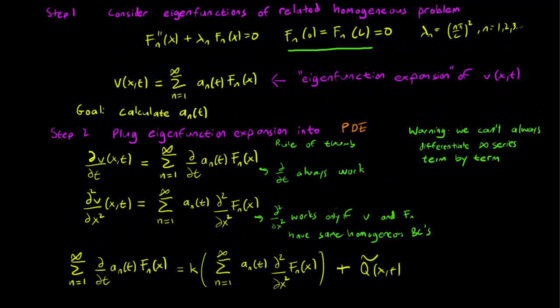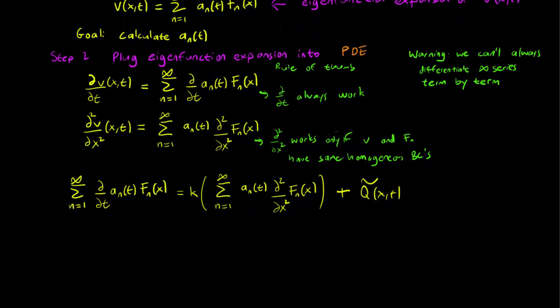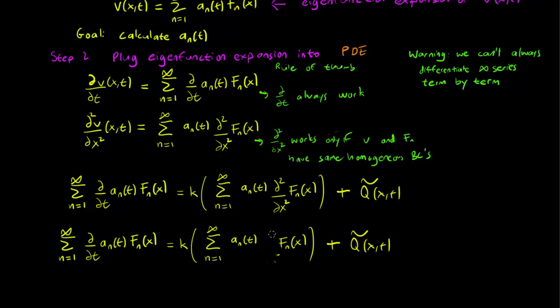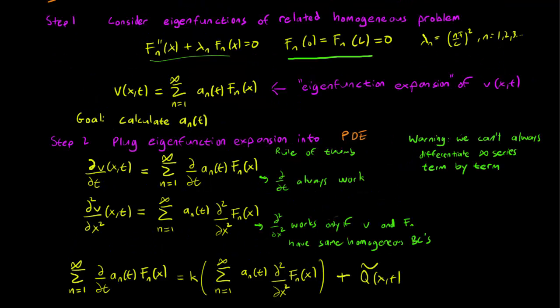But remember that the eigenfunctions satisfy F_n'' equals minus lambda_n*F_n. So what we can do is that we can replace the F_n'' with minus lambda_n*F_n(x). So rather than F_n'' here, we know that this is equal to minus lambda_n*F_n(x) just from this equation over here.